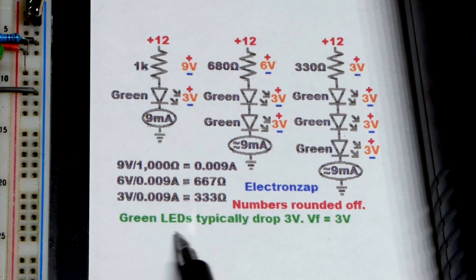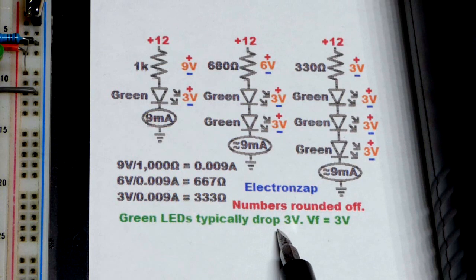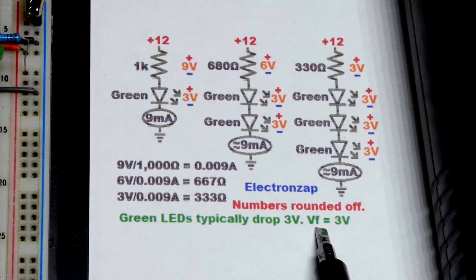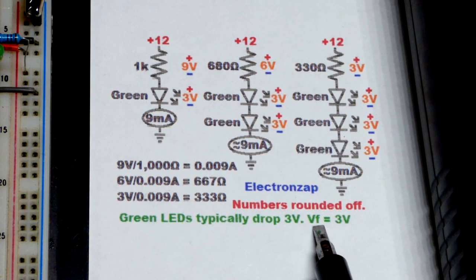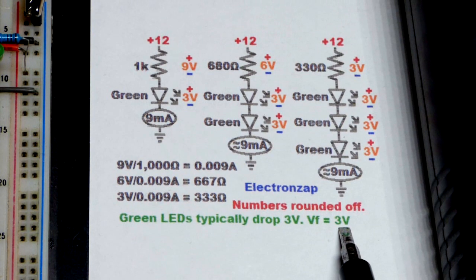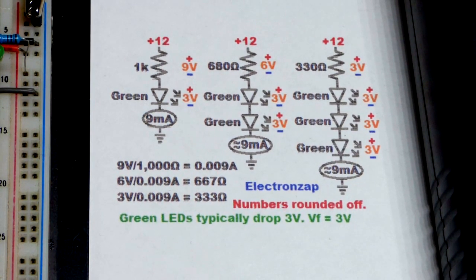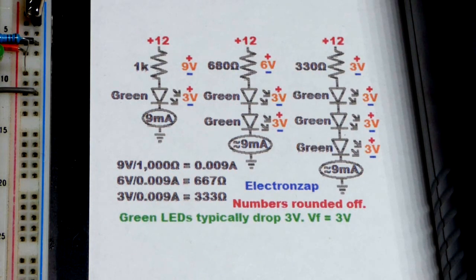Hopefully that makes sense. Since I wrote the note there, that green LEDs typically drop about 3 volts. When you look at a data sheet or other books, a lot of times they've got voltage and then a little f for forward to indicate that forward voltage. And then they'll usually list you the forward voltage you can expect. That's also the voltage that is dropped.